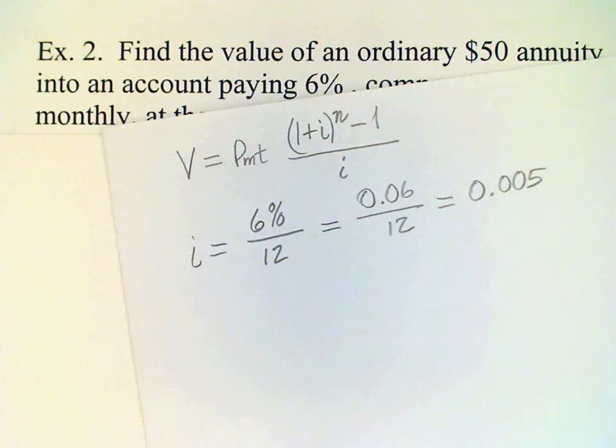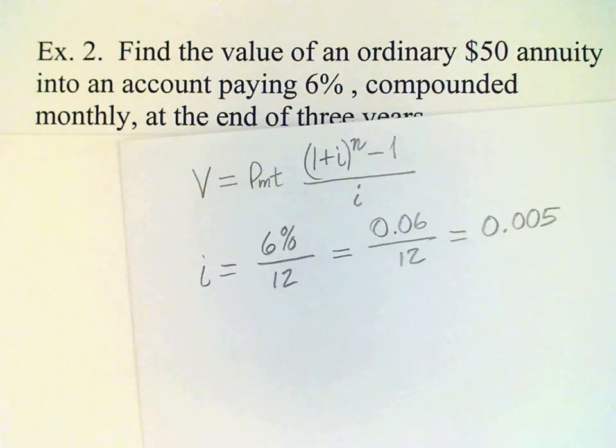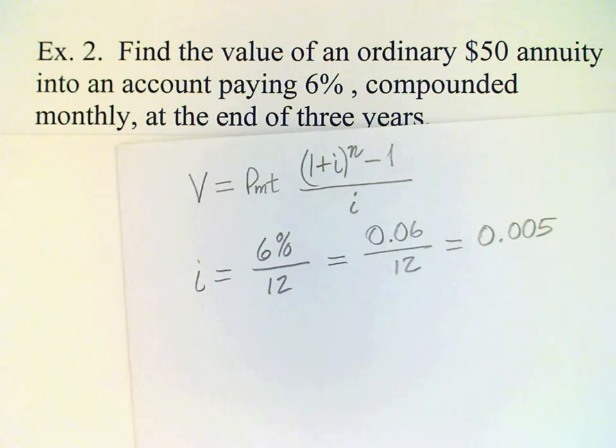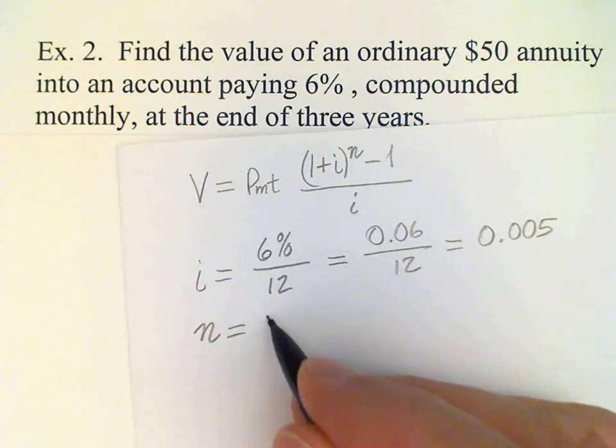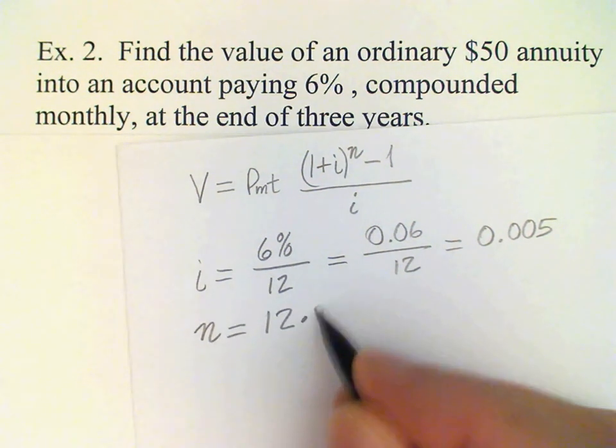And then we need to work out what N is. Well N is the number of periods, in this case months, in the total time which is 3 years. So how many months in 3 years is basically what we're asking. Well there's 12 months in a year so 12 times 3 is 36.